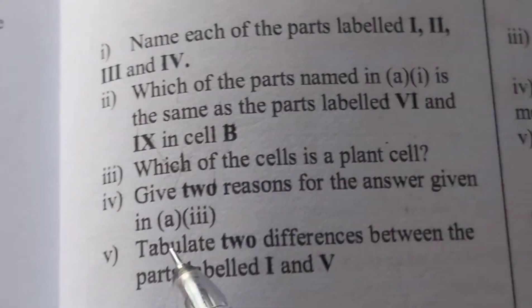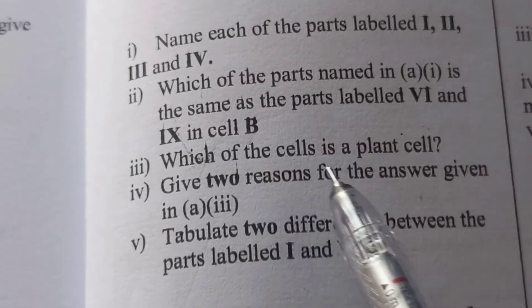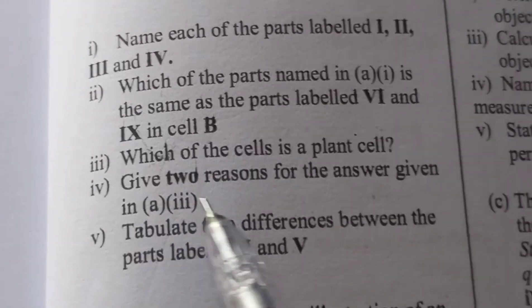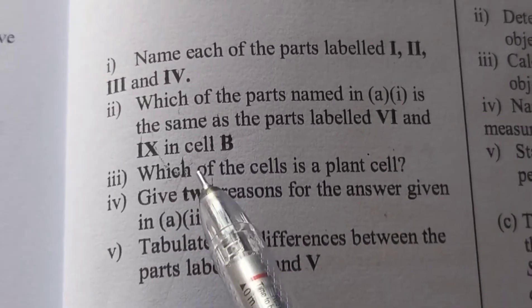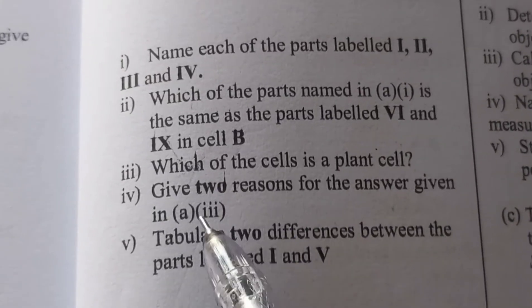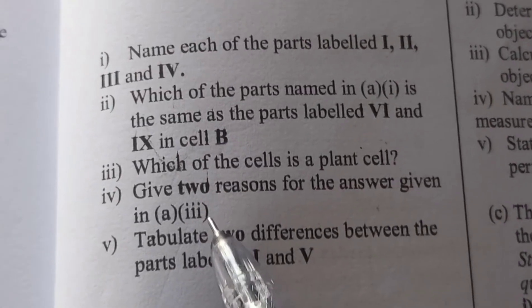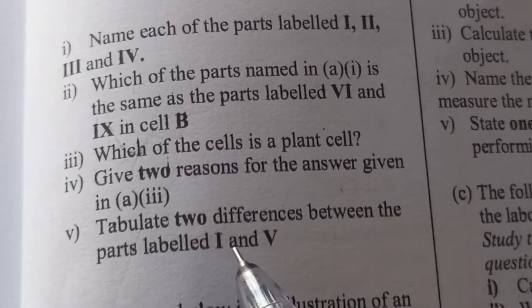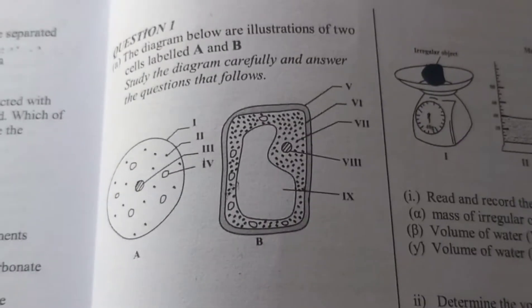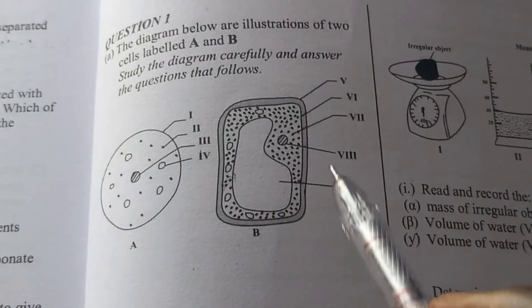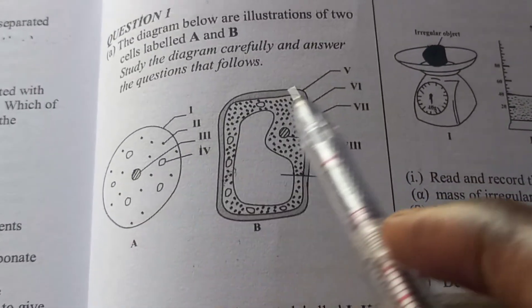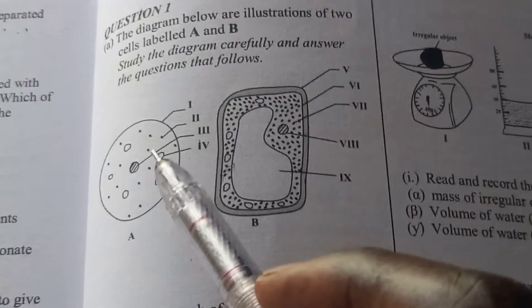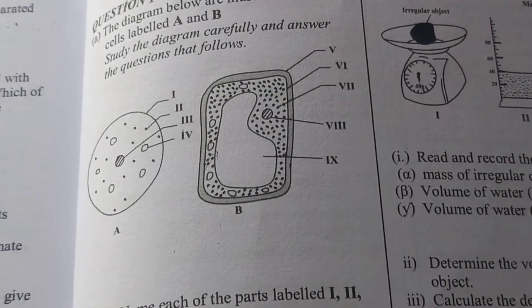Question 1a(iii) will say which of the cells is a plant cell - easy, you know the plant cell. But they say give two reasons for your answer. Then the last one says tabulate two differences between the parts labeled I and V. So this is your I and this is your V - they are not the same, so you'll put the differences in a table.